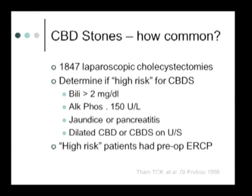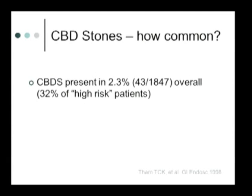If you look at this study by Tham, which looked at nearly 2,000 patients coming in for cholecystectomy and stratified them into high risk for having stones versus non-high risk — any patient considered high risk by these parameters was taken to ERCP preoperatively. What they found was about a 7% rate of stones during the ERCP, meaning 32% of patients classified as high risk ended up having a stone, about 2.3% overall.